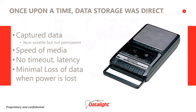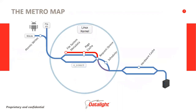Embedded devices used to be like this Panasonic cassette recorder. It captured data onto a non-volatile and non-permanent media where bit errors and loss of data could occur, much like today. It had no memory buffers. All the data was captured and stored at the speed of the media. This device also had no worries about timeout or latency, and only minimal loss of data when the power was interrupted.